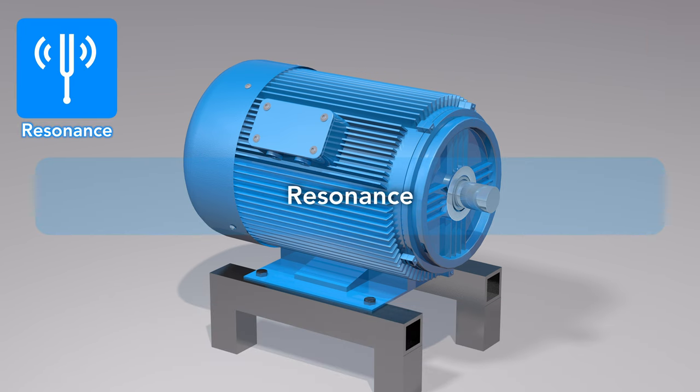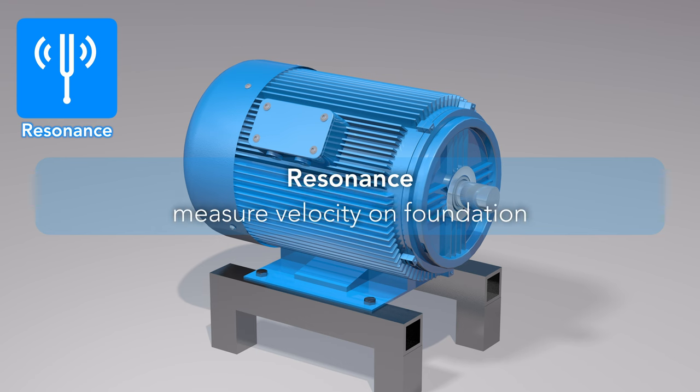A unique type of fault is resonance, which is mimicked as an unbalance with a single speed line in the spectrum. Balancing will have minimal effect, as the real problem is the natural frequency of the machine foundation near the speed frequency. To identify this, measure the velocity at the foundation. If the values are low at the ends and high in the middle, resonance is the problem. Strengthening of the foundation is usually required. This will change the natural frequency.